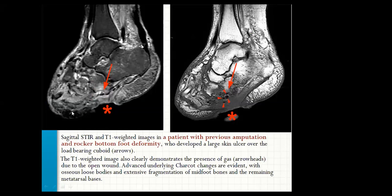This MRI image shows STIR and T1-weighted images in a patient with a previous amputation and rocker bottom foot deformity who developed a large skin ulcer over the load-bearing cuboid. The T1-weighted image also clearly demonstrates the presence of gas. Due to the open wound, advanced underlying Charcot changes are evident, with osseous loose bodies and extensive fragmentation of the midfoot bones and the remaining metatarsal bases.